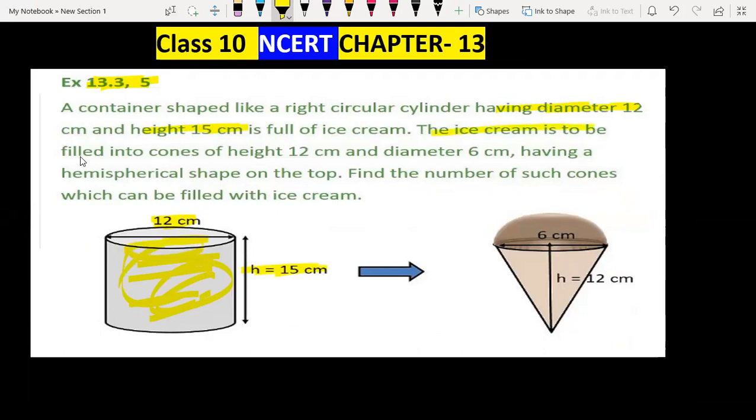This ice cream is to be filled into cones of height 12 cm and diameter 6 cm, having a hemispherical shape on the top. Find the number of such cones which can be filled with ice cream.